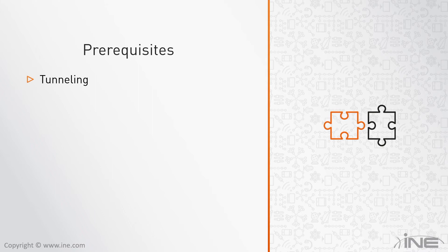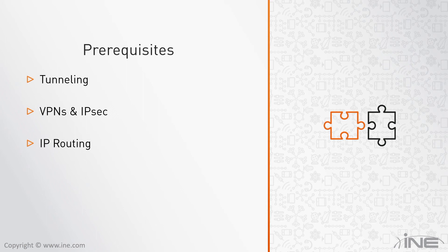You should also be familiar with basic concepts related to virtual private networks, especially IPsec, because GET VPN actually uses IPsec — it is just a different way of using IPsec to provide protection to data packets. You should also be familiar with IP routing, IP version 4, and IP version 6, even though I will not be configuring routing in the demonstrations. You should understand how routing protocols work and how they build the control plane of the network to prepare it for data plane communication.